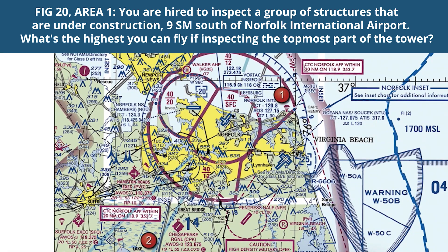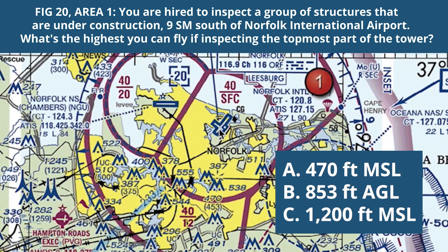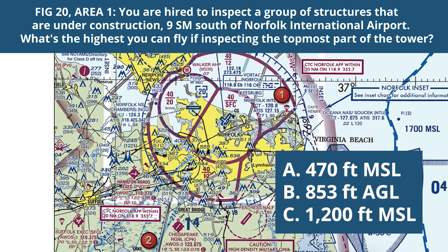You're hired to inspect a group of structures that are under construction nine statute miles south of Norfolk International Airport. What's the highest you're allowed to fly if inspecting the topmost part of the tower? This is a multifaceted question. The first thing we have to do is find Norfolk International Airport — this icon right here represents the middle of the airport. It's a Class Charlie airport. I'm going to focus on the specific question, but if you're confused about any of this stuff, you're learning a lot more as you go through this test prep process.